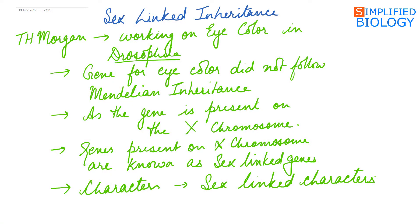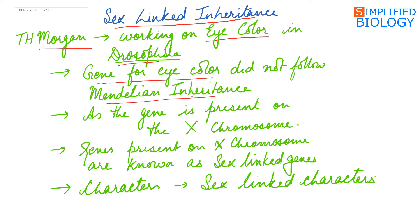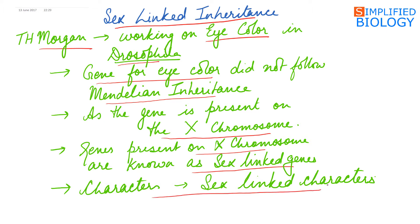Sex-linked inheritance was discovered by T.H. Morgan, while working on eye color in Drosophila. He found that the gene for eye color in Drosophila did not follow the Mendelian pattern of inheritance. This was due to the gene being present on the X chromosome. All genes present on the X chromosomes are known as sex-linked genes, and those characters are sex-linked characters. The study of inheritance of those characters is known as sex-linked inheritance.